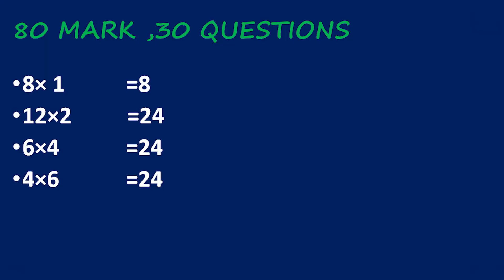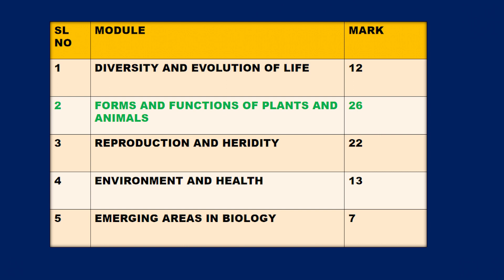There are many different questions about marking. There are questions around two, three, and four marks. Forms and Functions of Plants and Animals is 22 marks. Reproduction and Heredity is 22. Environment and Health is 23. Emerging Areas in Biology is 7.